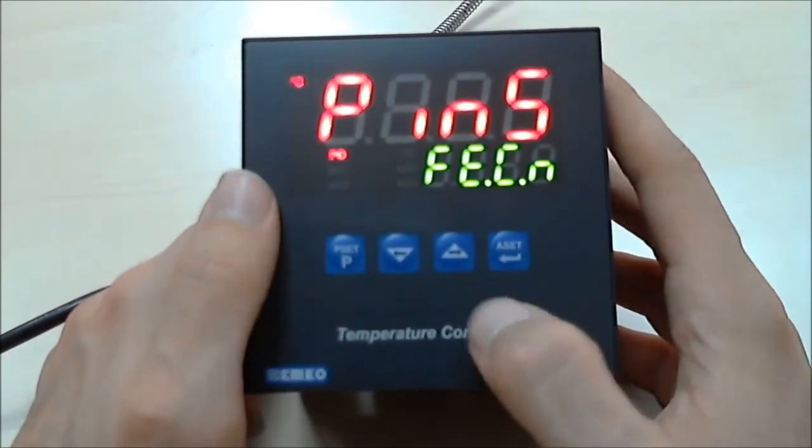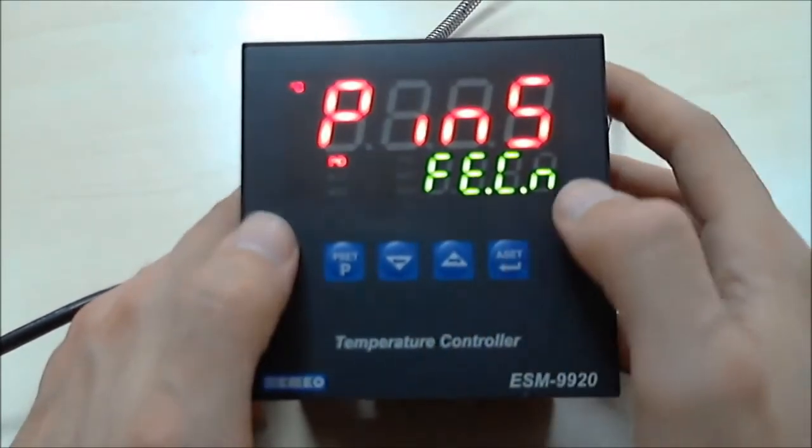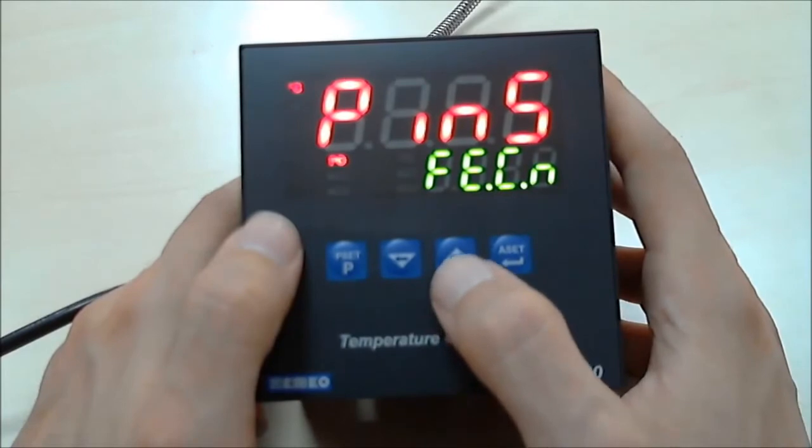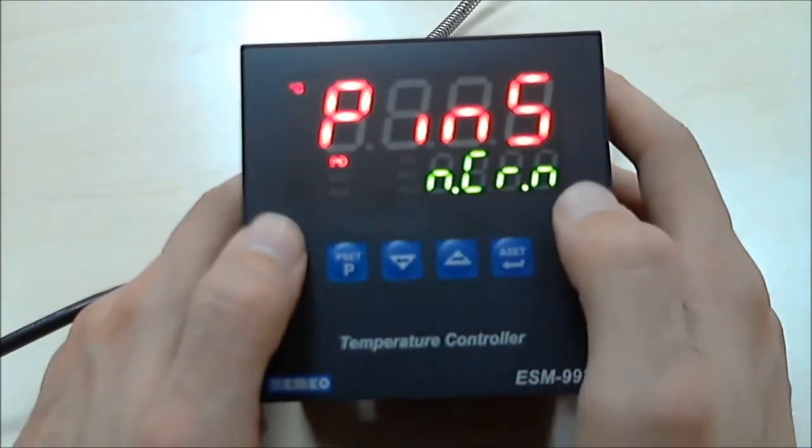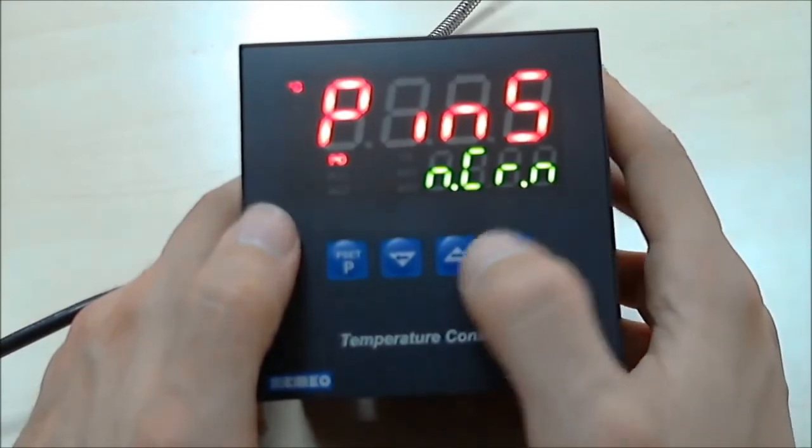You can make your choice using increment or decrement buttons. This is for G-type thermocouple. And this one is for K-type Nickel-Chromium thermocouple.